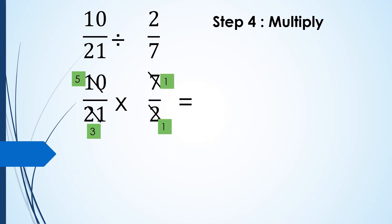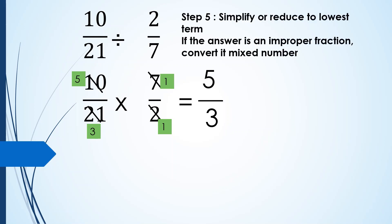So, let us multiply the remaining numbers. 5 times 1 is equal to 5 and 3 times 1 is equal to 3. And then, for the last part, simplify or reduce to lowest term or in this particular case, the answer is an improper fraction. So, we have to convert it to mixed number. So, paano ulit? That is equal to 5 divided by 3 is equal to 1. Mayroon tayong remainder na 2 and then copy the denominator 3. So, our final answer is 1 and 2 thirds.